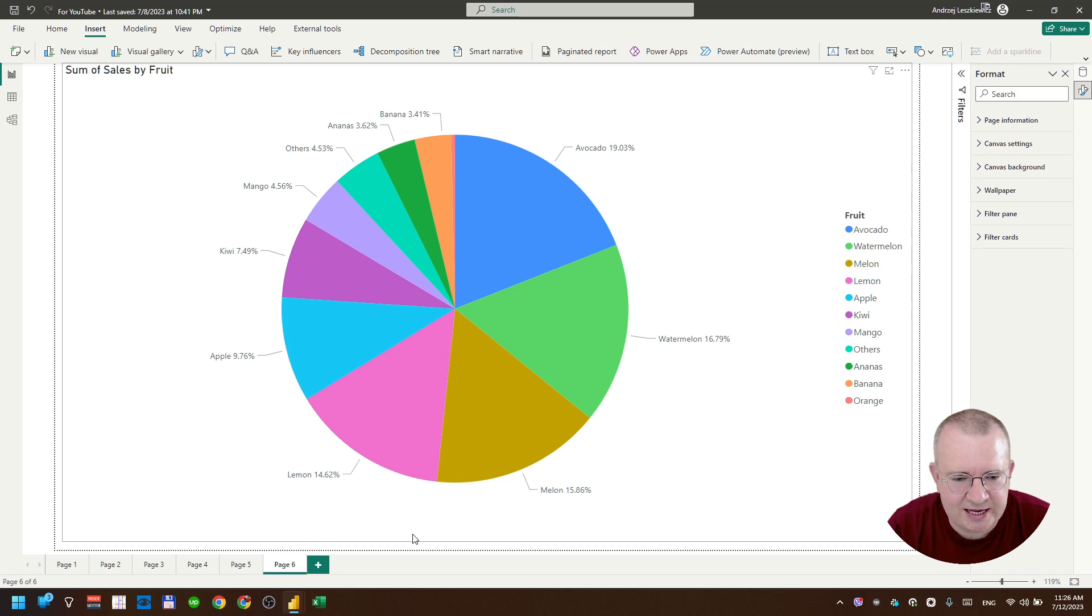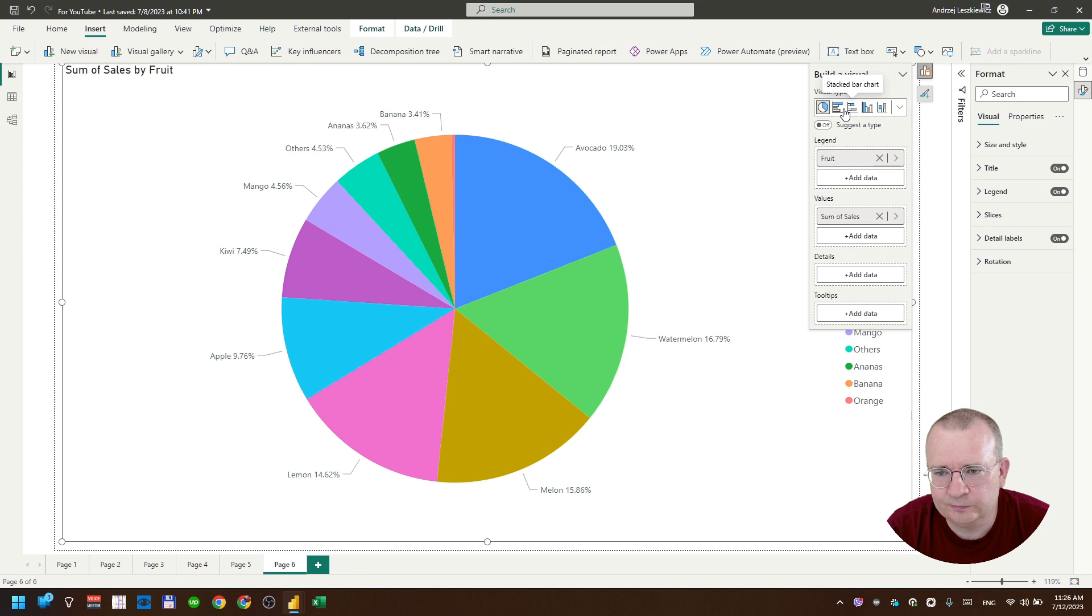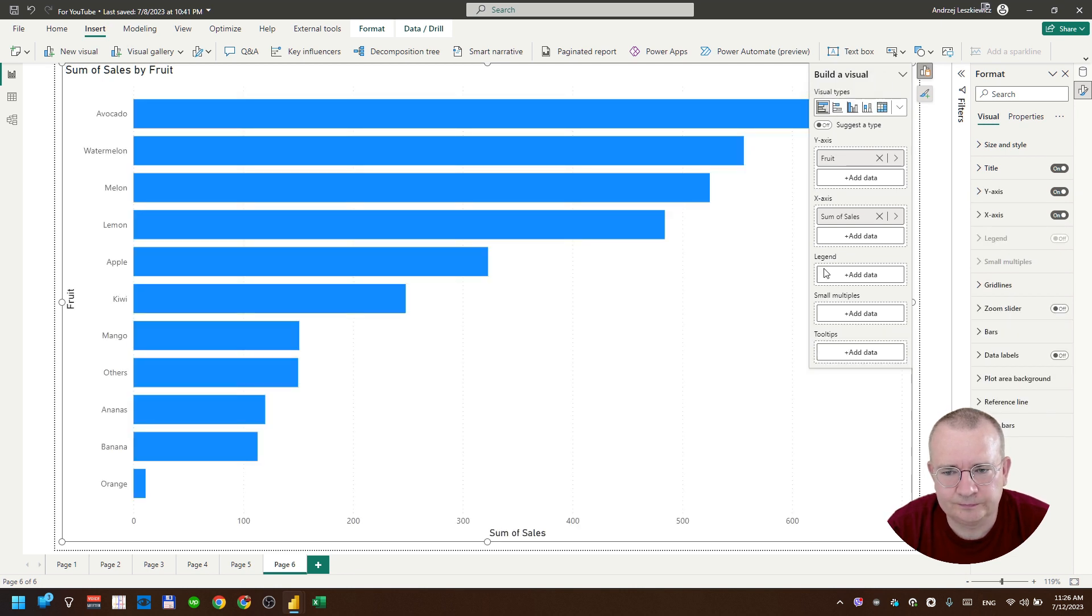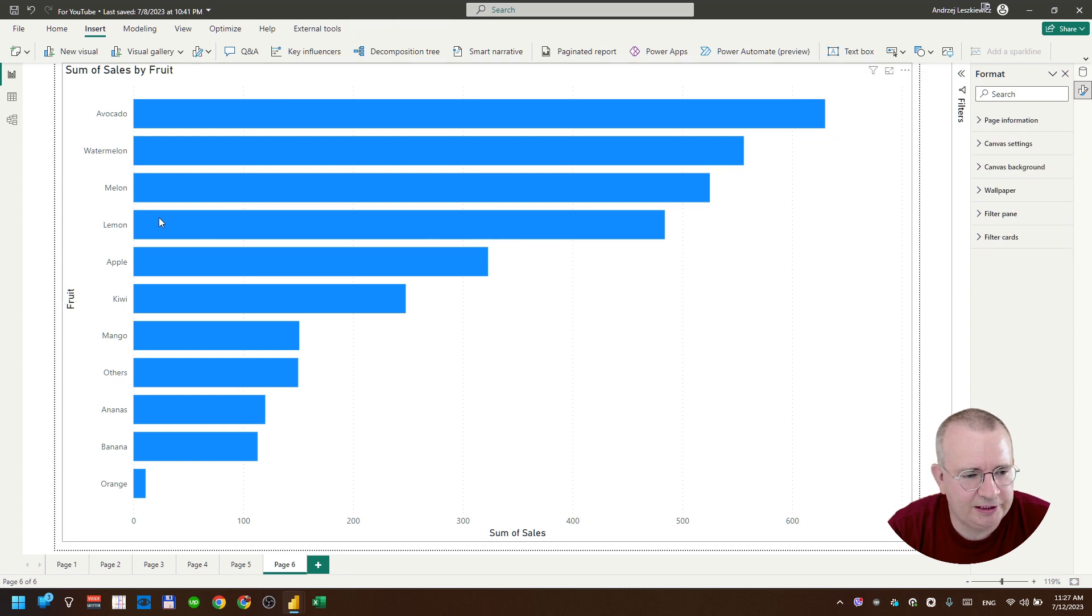So let's try to make a better chart that represents the same data but in much more understandable way. We need just a few clicks to do so. Now we can change chart type from pie chart to bar chart. This is it. It's already much better.